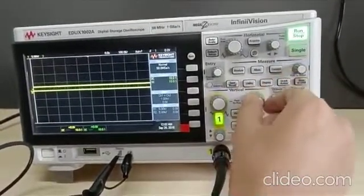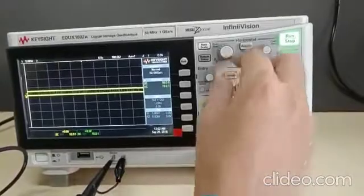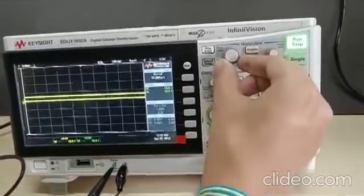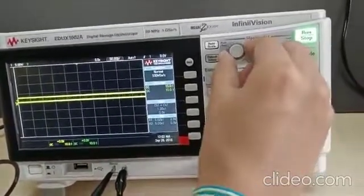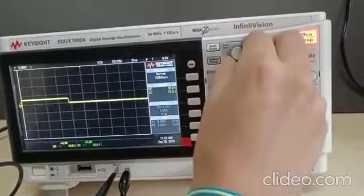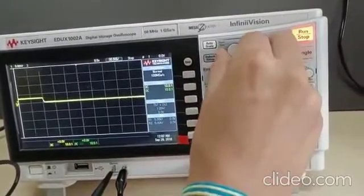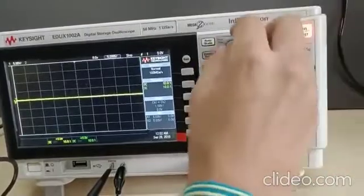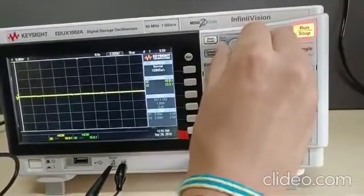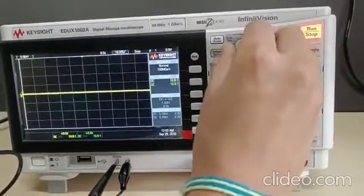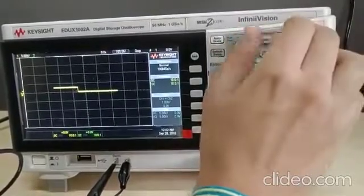And now we will move on to time per division. The time per division knob is on the horizontal scale. By moving time per division clockwise, we reduce the time per division scale. And by moving it anti-clockwise, we increase the time per division scale.